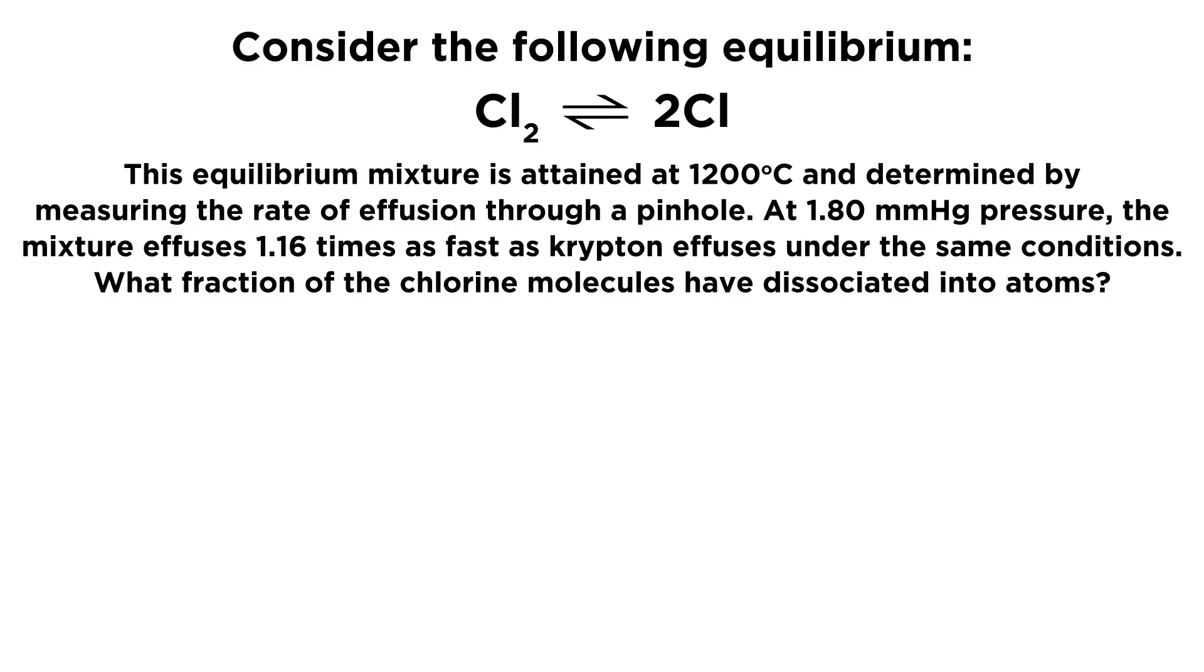The question asks us to consider the following equilibrium, and that is the one between diatomic chlorine, or a chlorine molecule, and two chlorine atoms, which would be two chlorine radicals. So this is the equilibrium between chlorine gas and the dissociated version, two chlorine radicals.